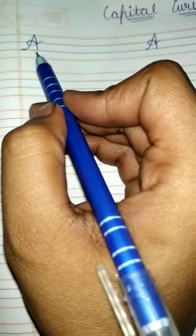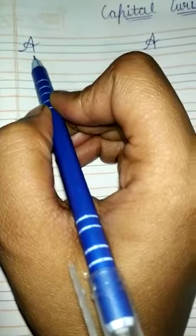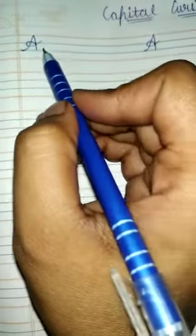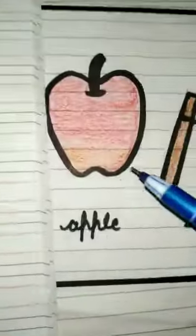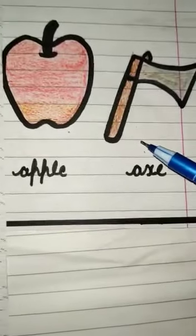Our first letter is A. Which letter is this? A. What is this? A. A and apple. A and eggs.